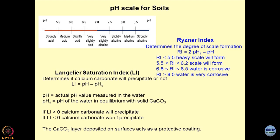The Reisner index can be utilized to study how scales are getting formed on buried systems. It is defined as 2 times PHS minus pH. You need not remember all these — the codes are available, just try to understand the applications. If RH is less than 5.5, heavy scales will form. Scaling means carbonates getting deposited.